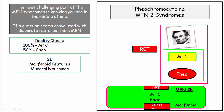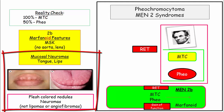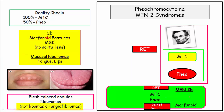MEN2B still has medullary thyroid carcinoma and pheochromocytoma. What makes 2B unique are the marfanoid features and mucosal neuromas. In this syndrome, it is only the musculoskeletal manifestations — such as kyphoscoliosis and long, lean body with abnormal lower-to-upper body ratio — but they do not develop lens ectopia and aortic disease, which is why it is called marfanoid. Mucosal neuromas may be described as flesh-colored nodules on the lips or tongue. These are not lipomas or fibromas — lipomas may be seen in MEN1, so don't get fooled by that subtle difference.